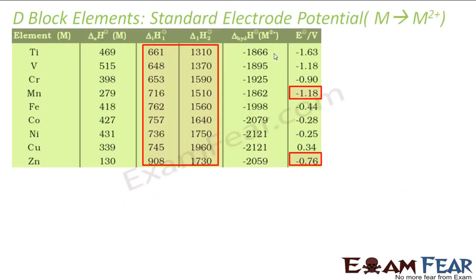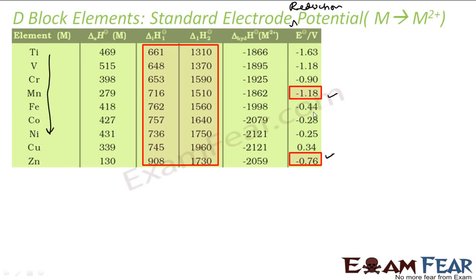Now let's start the trend for standard electrode reduction potential. If you look across the series from titanium, vanadium, chromium onward, the value becomes less and less negative. For example, the values go from minus 1.63 to minus 1.1, then minus 0.9 — though there are some irregularities. The values generally decrease across the series with some irregularities, which we'll discuss.